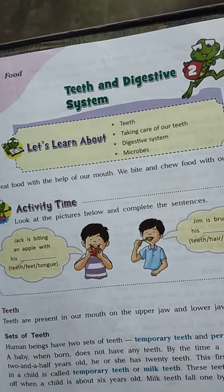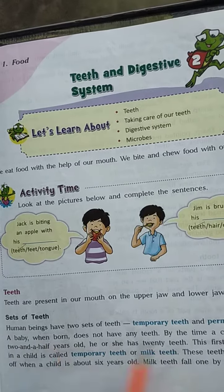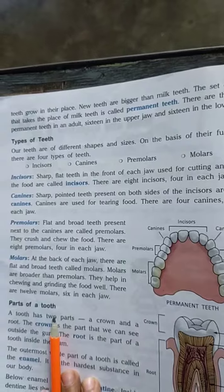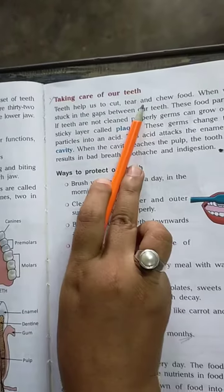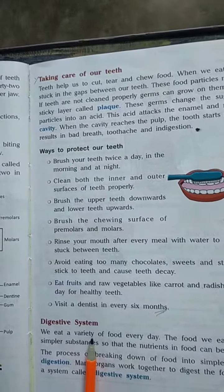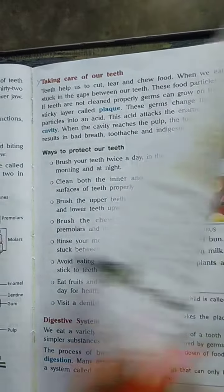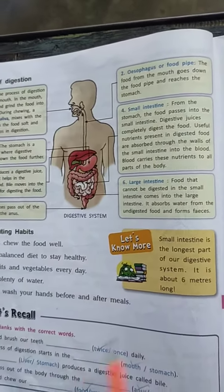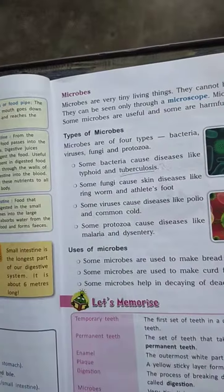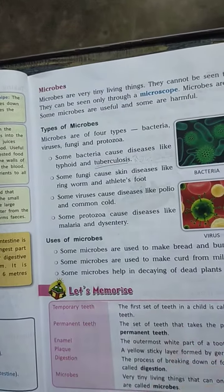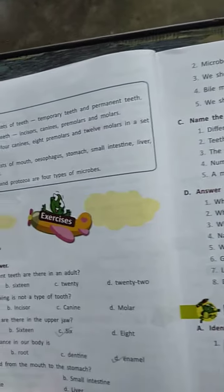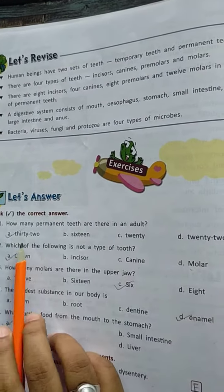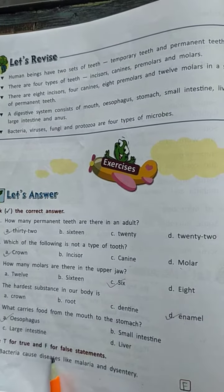Do you remember? In the previous class we already discussed the types of teeth, parts of a tooth, taking care of our teeth, what is the digestive system, healthy eating habits, what are microbes, types of microbes, and uses of microbes.